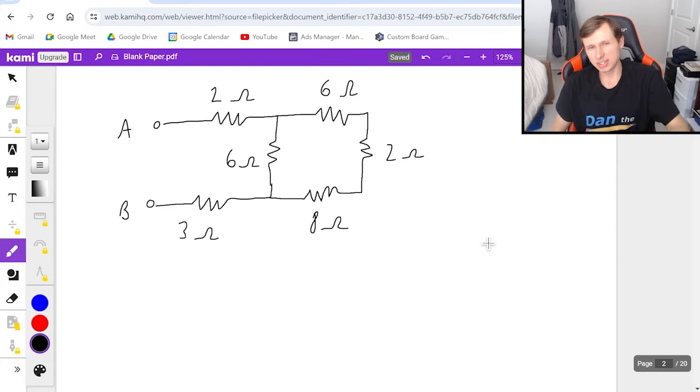And before we even start this, first of all, you're going to need plenty of room if you want to follow along with me and you want to write on paper, because we're going to be redrawing the circuit every time we combine some resistors. So we're probably going to have to redraw the circuit like two or three times.